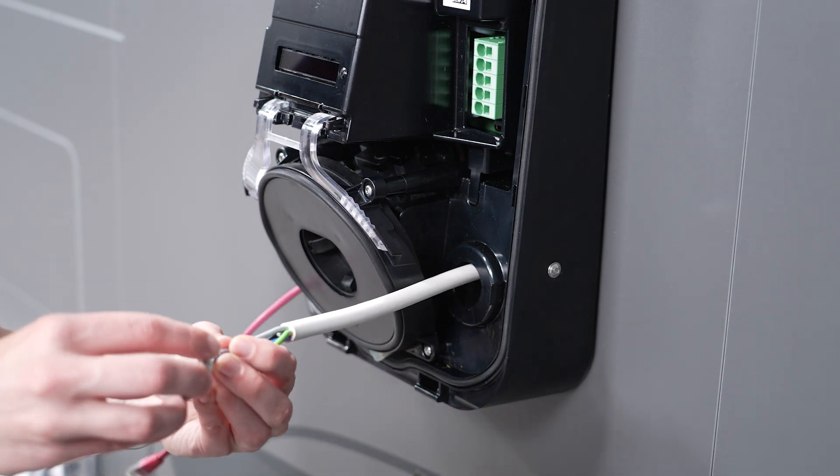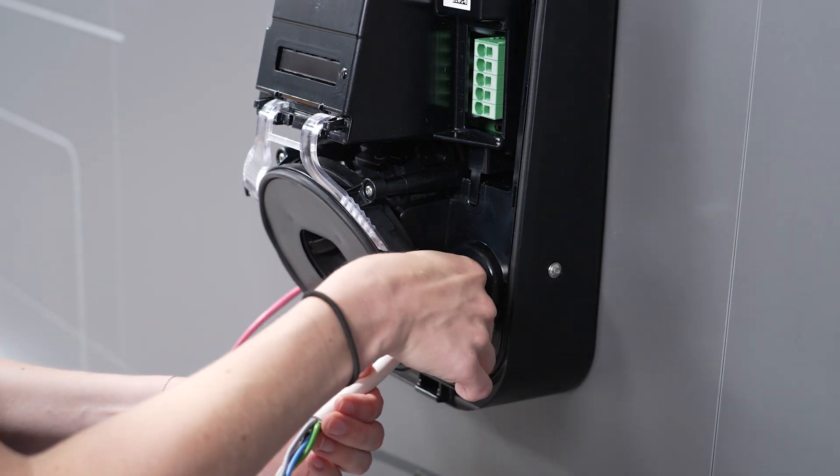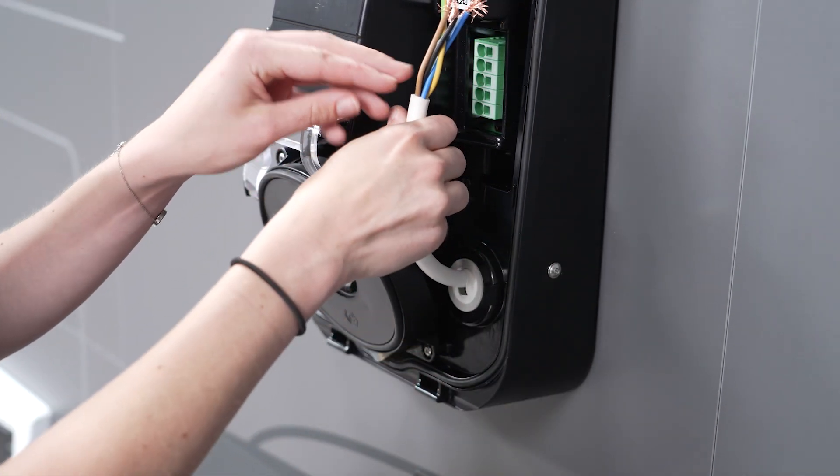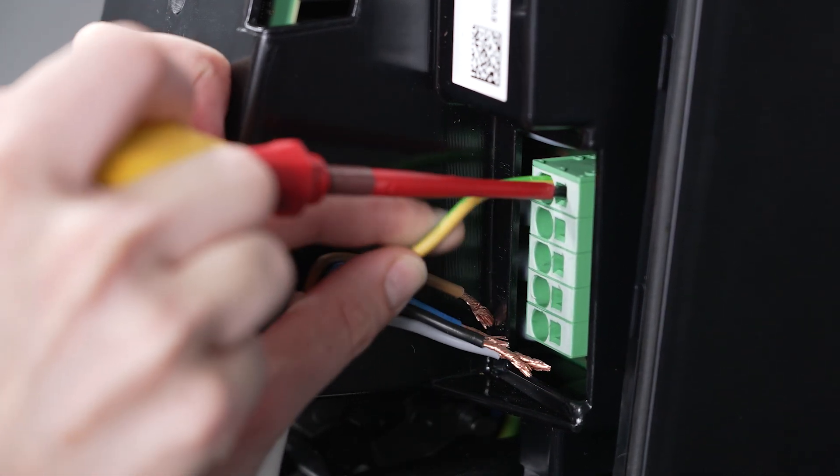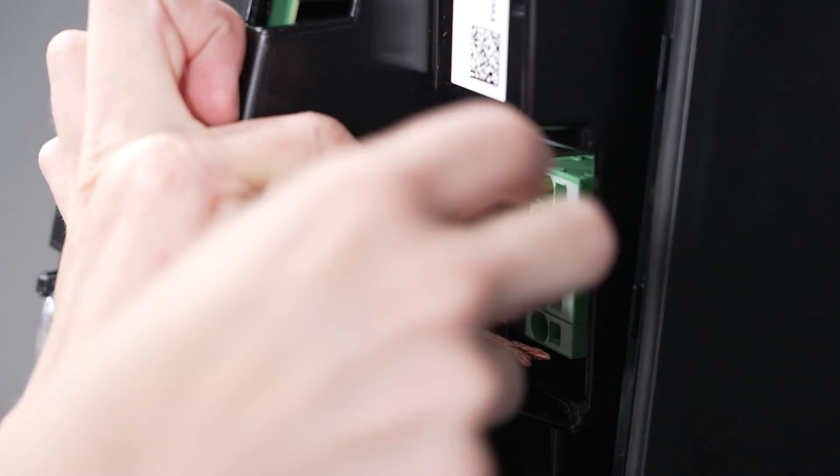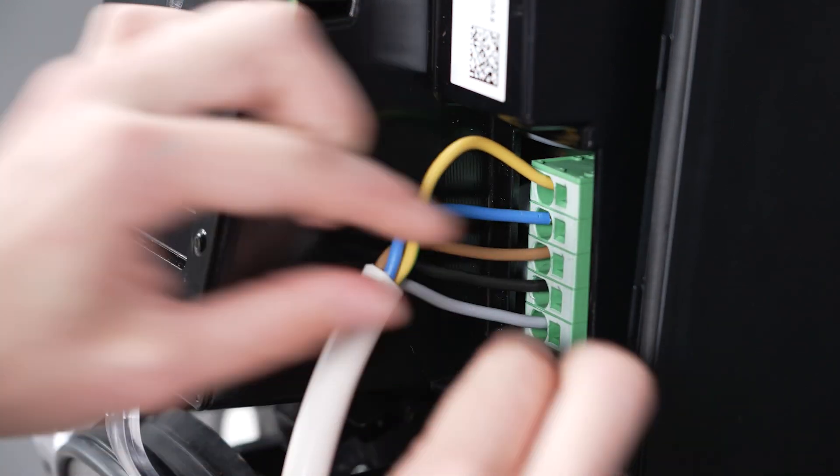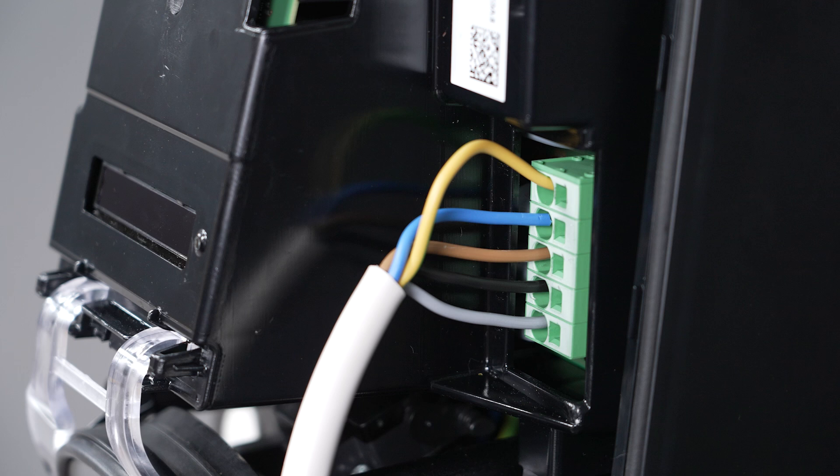Now I take care of the AC connection. To do this, guide the prepared seal over the cable. Make sure that the seal fits properly. Next, strip the cable, strip the wires, fit wire end ferrules if necessary, and insert into the spring terminals with the aid of a screwdriver. The correct assignment can be found in the labeling enclosed. Finally, check the tight fit with a tensile check.